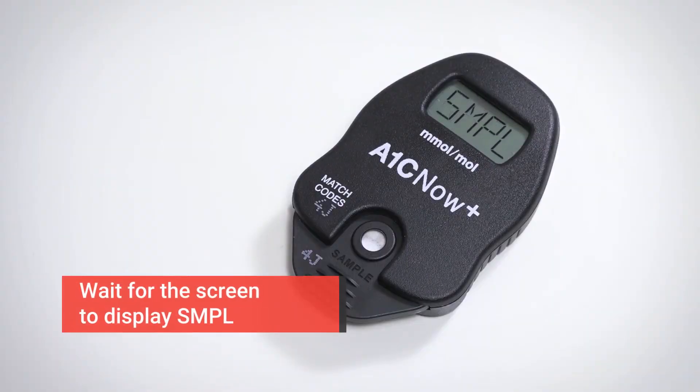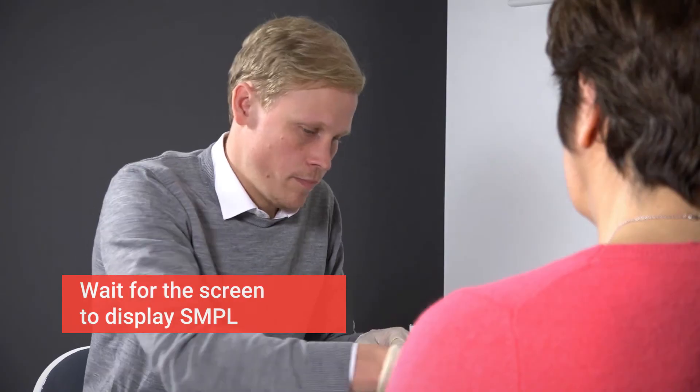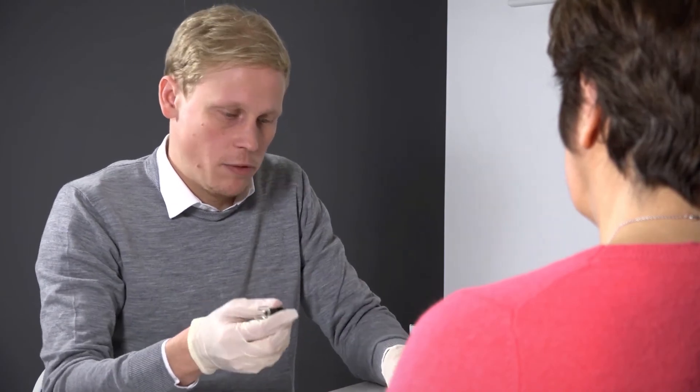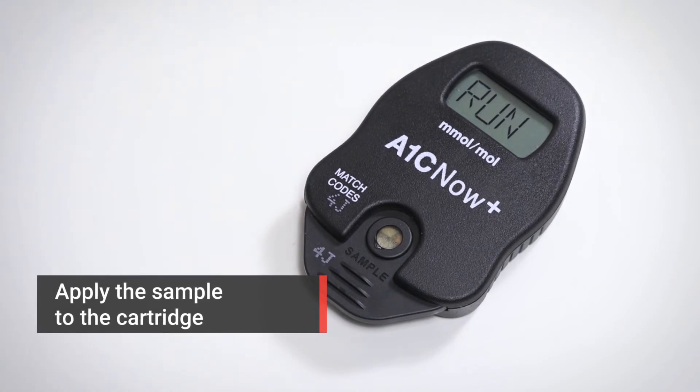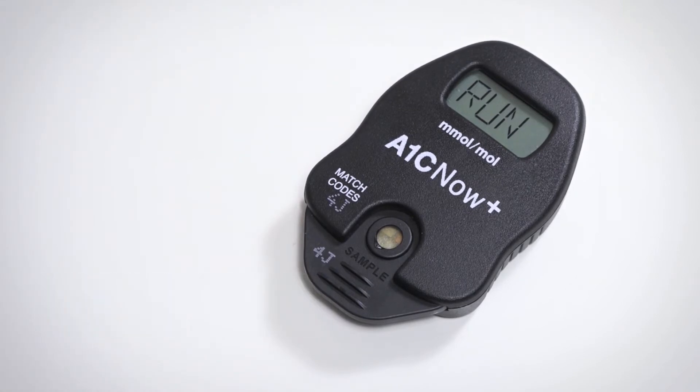Wait for the screen to display sample with a flashing blood drop. Now remove the grey cap from the diluent bottle. Apply the sample to the cartridge with a quick press and release motion. When you hear the click, it will allow the exact amount of sample to be inserted.